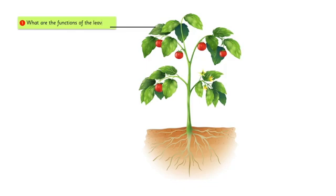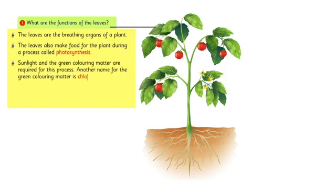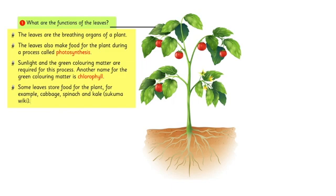What are the functions of leaves? The leaves are the breathing organs of a plant. The leaves also make food for the plant during a process called photosynthesis. Sunlight and the green coloring matter are required for this process. Another name for the green coloring matter is chlorophyll.